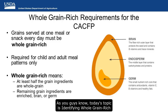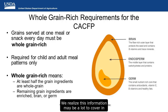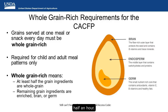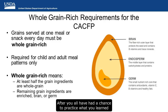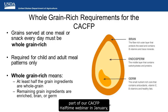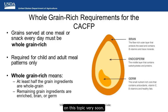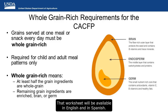Today's topic is identifying whole grain rich foods for the CACFP using the ingredient list. We realize this information may be a lot to cover in half an hour, so today's webinar will cover more of the basics. After you've had a chance to practice over the next few months, we will revisit this topic as part of our CACFP Halftime Webinar on January 17th. Team Nutrition will also be releasing a training worksheet on this topic very soon, available in English and in Spanish. In the meantime, we've included the USDA grains policy memo as a handout for this webinar.